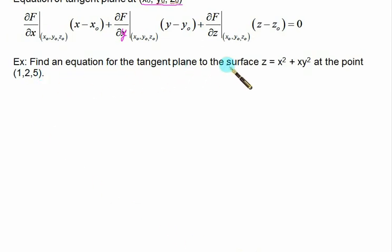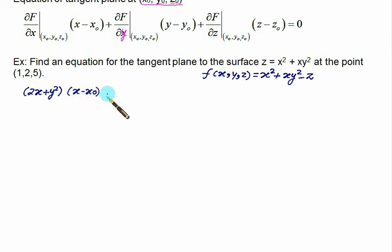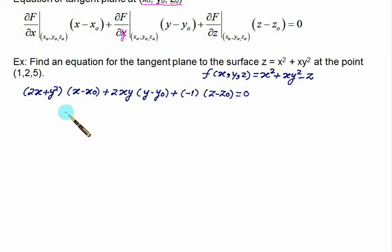Next problem: find the equation of the tangent plane to the surface z = x² + xy² at the point (1, 2, 5). Define F(x,y,z) = x² + xy² − z. We write the tangent plane equation directly: ∂F/∂x = 2x + y², evaluated gives (2x + y²)(x − x₀) plus ∂F/∂y = 2xy times (y − y₀) plus ∂F/∂z = −1 times (z − z₀) = 0. Put x = 1, y = 2, z = 5 and solve.